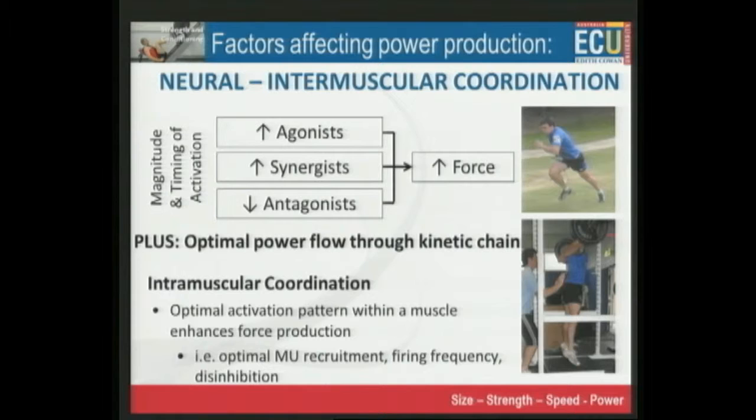It's an extremely complex interaction between the agonists — the muscles that are producing the movement — the synergists, the muscles that contract and interact to increase the efficiency of the agonists, and then the antagonists, the opposing muscles, which have to be switched off and relaxed at the appropriate time to optimise the performance.